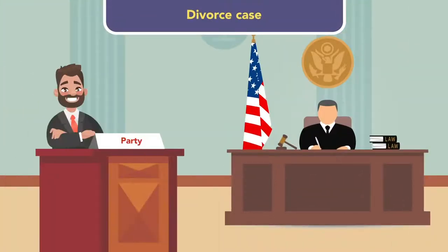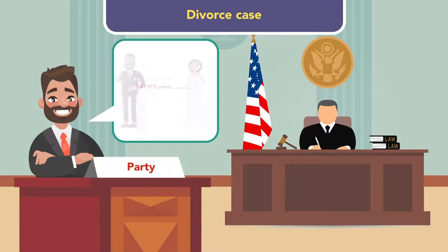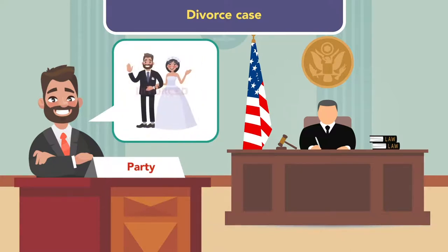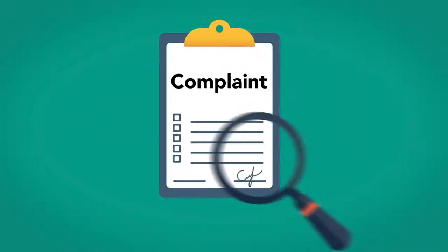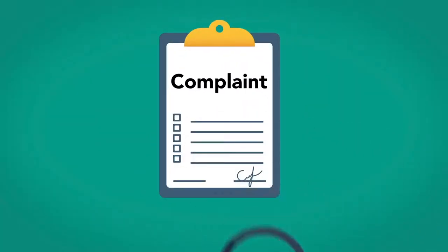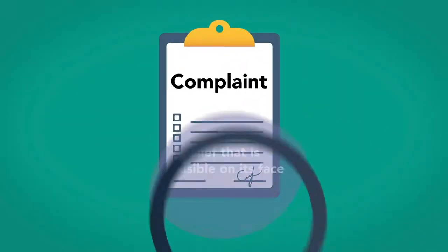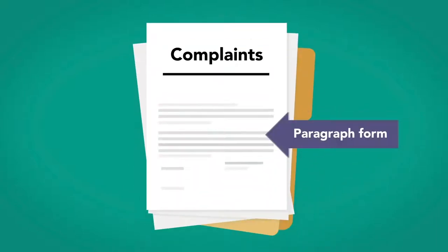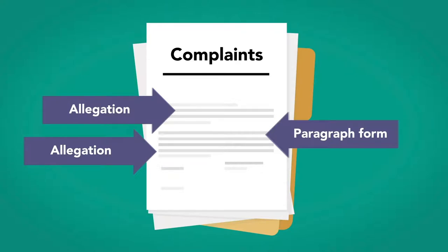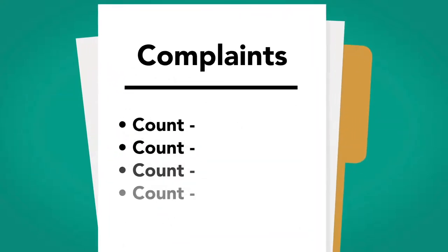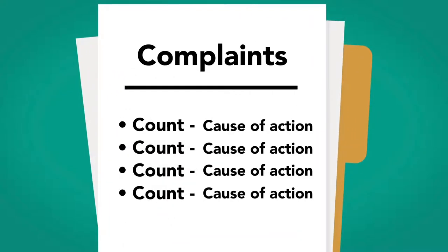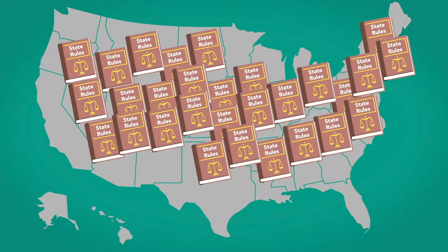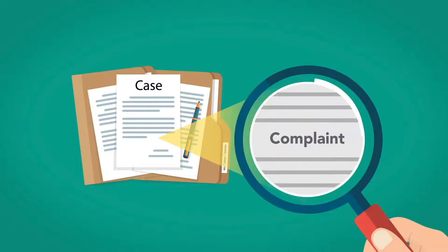In a divorce case, the behavior might be a reason for the divorce that conforms to the state divorce statute, and the relief would be a divorce. A complaint must contain sufficient factual matter, accepted as true, to state a claim to relief that is plausible on its face. Complaints are laid out in paragraph form, with one allegation per paragraph. Complicated complaints lay out multiple counts, with each count comprising a separate cause of action. Most state rules follow the same basic structure. So let's look at a case to see how to construct a complaint.